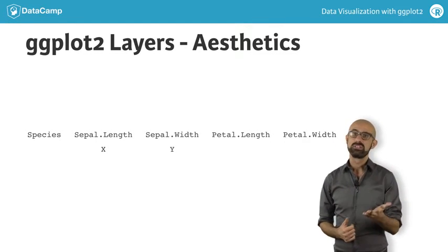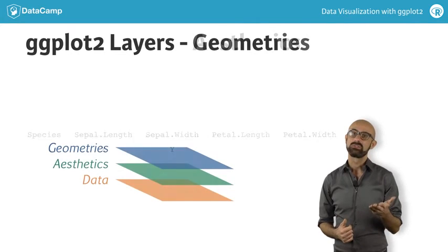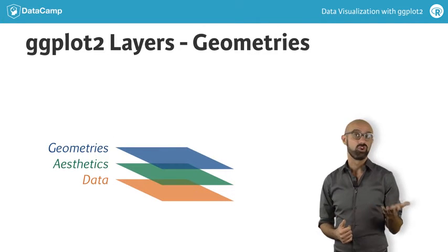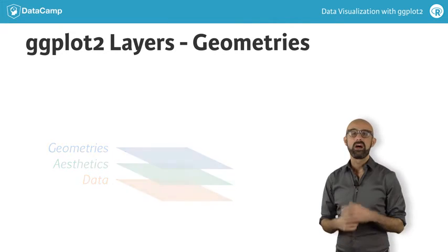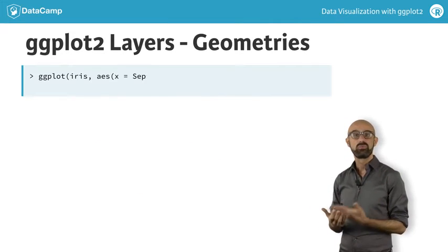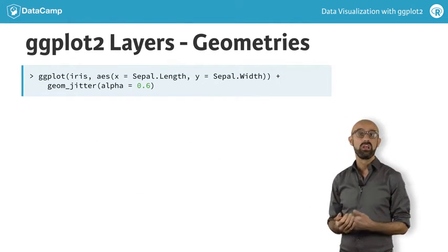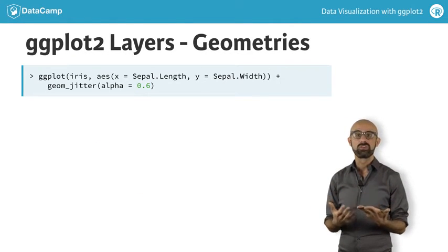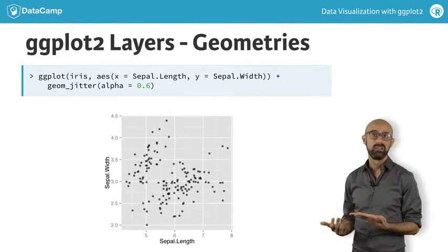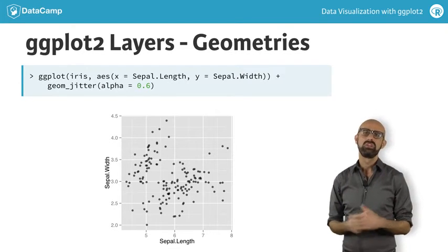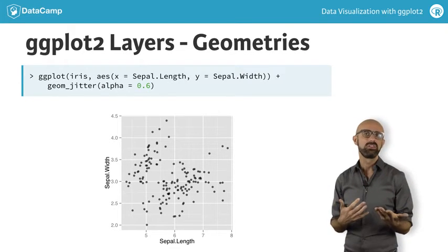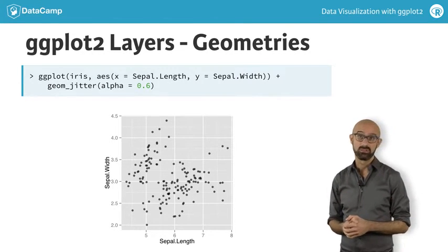The third essential layer allows us to choose the geometry — that means how the plot will look. After we've established our three essential layers, we have enough instructions to make a basic scatter plot. It's pretty rough, so to get a more meaningful and cleaner visualization, we'll have to use the other layers.